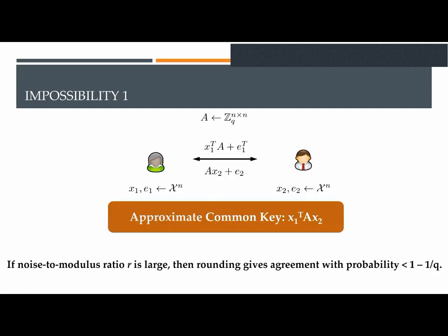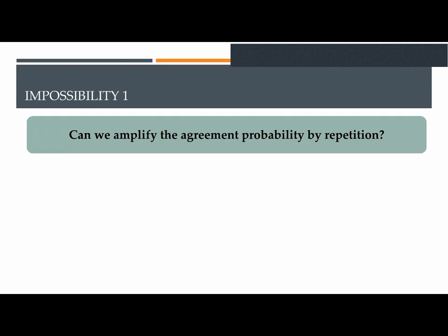Remember that the parties can achieve approximate agreement after only one round. An easy analysis shows that they actually achieve agreement with probability 1 minus 1 over q. Thus, a natural question is whether we can amplify this agreement probability by repetition. Namely, assume that instead of just one sample, the parties exchange many samples. Then for each of the samples, they take the inner product with the corresponding secret, as in the one-sample case.